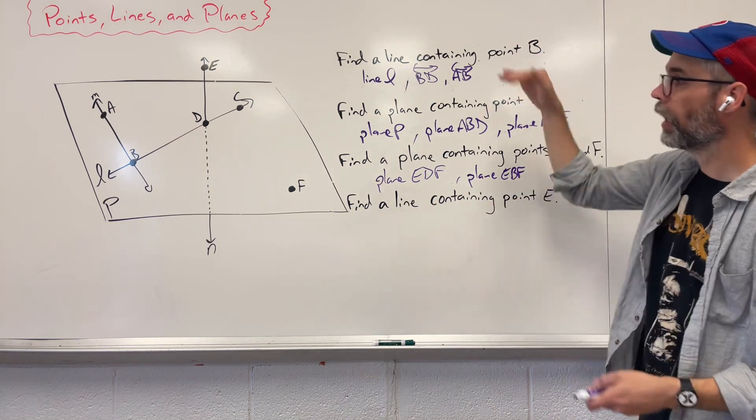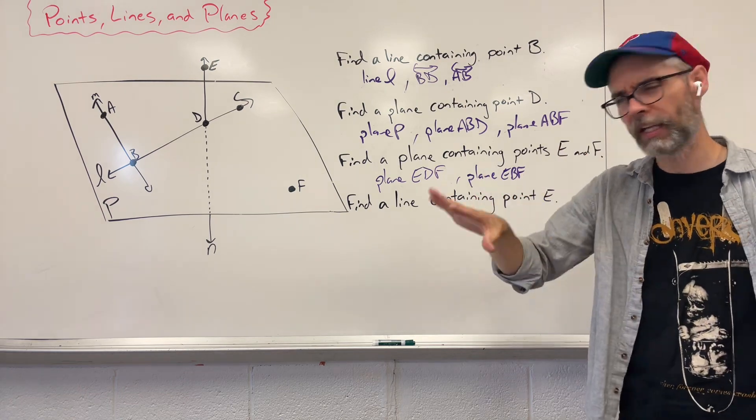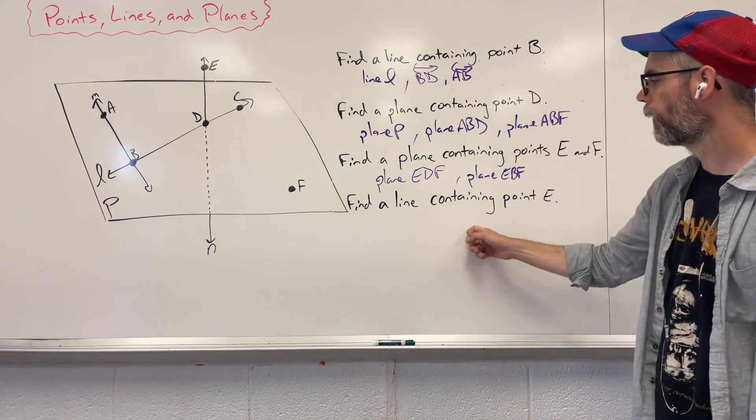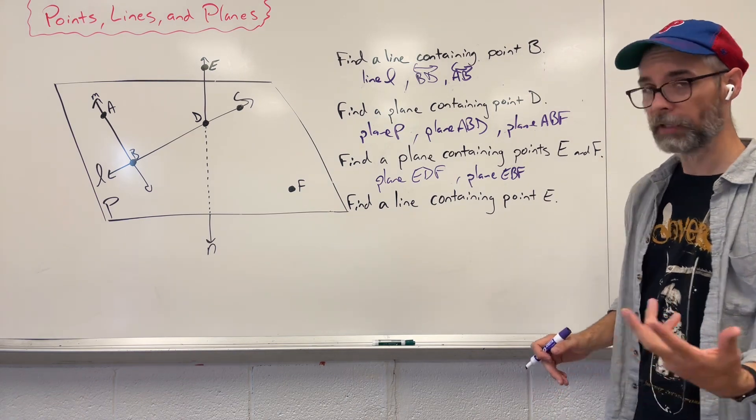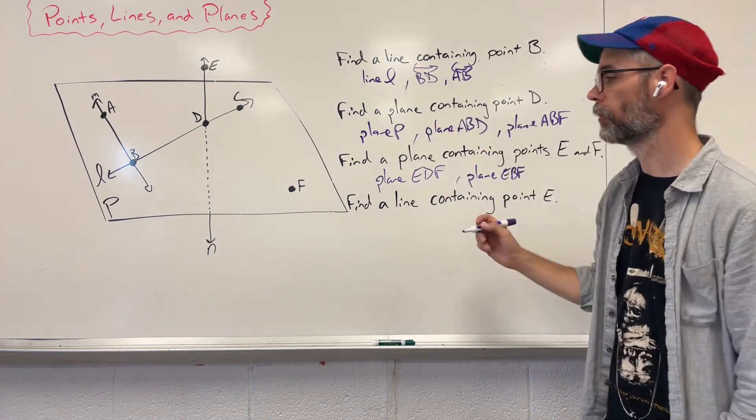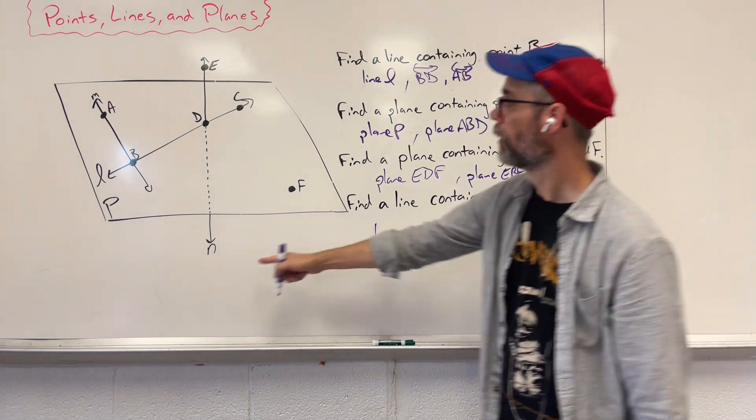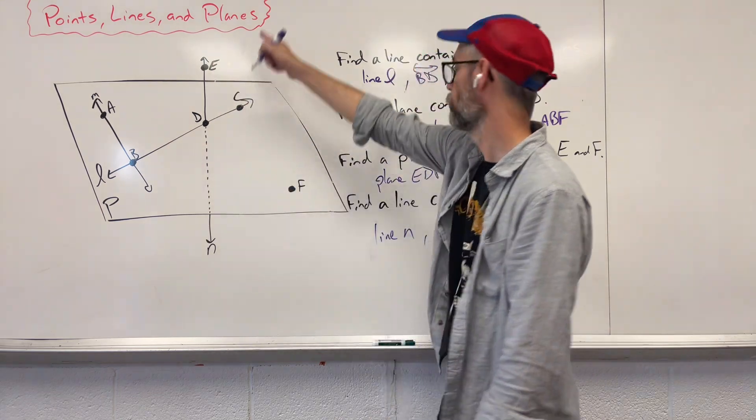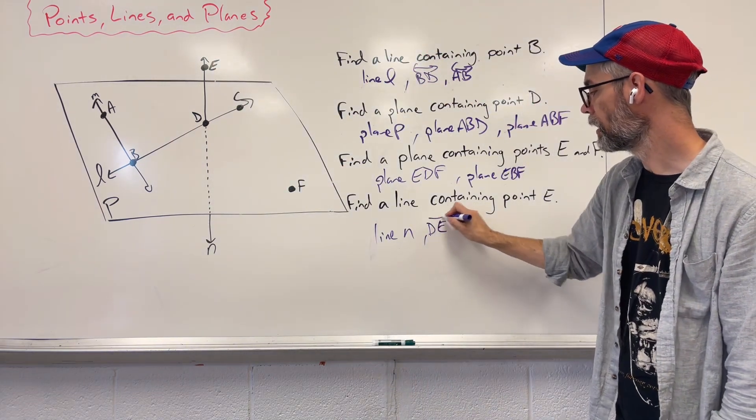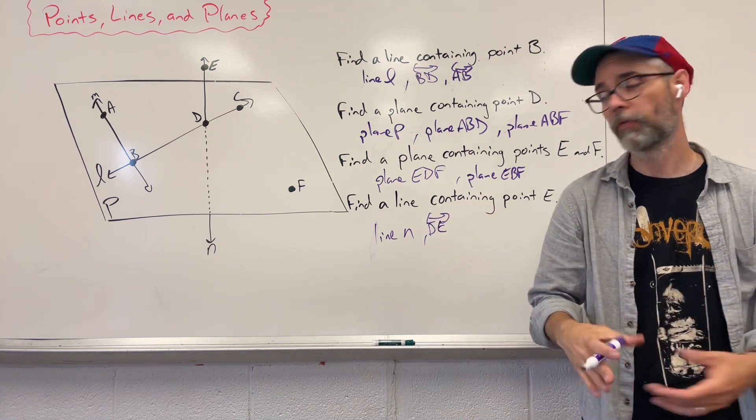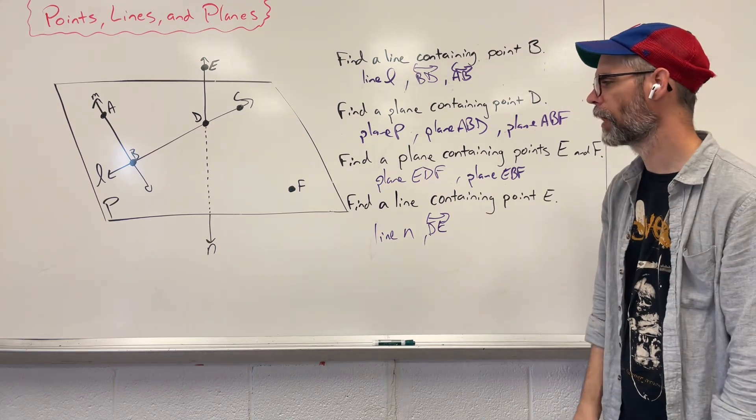When it comes to lines, we want to try and keep it with what we see. When you see a plane, we have a little more freedom to kind of expand out. Find a line containing point E. So here, again, like what we did up here, we have two options. We could say line N. Line N contains point E. Or we could say DE with a little line on top of it to say line DE. You could also write ED, also works, doesn't matter if it's backwards.